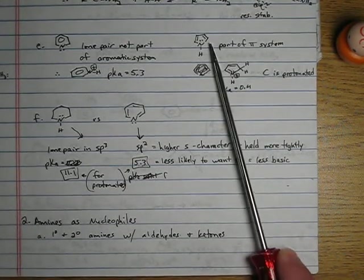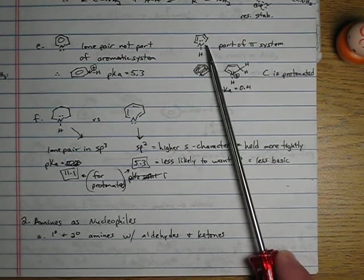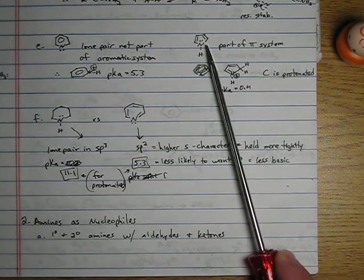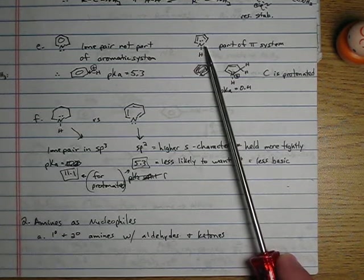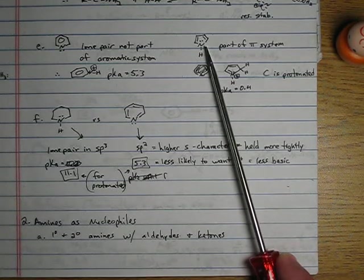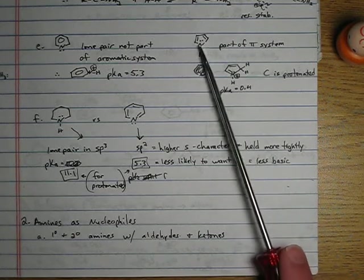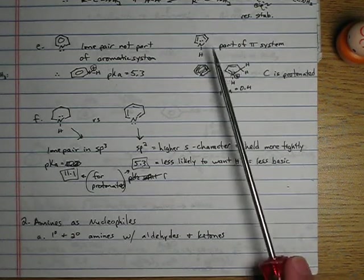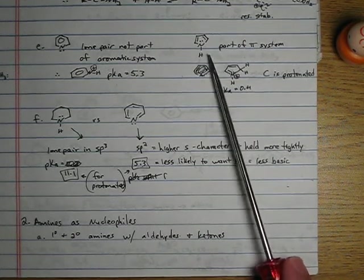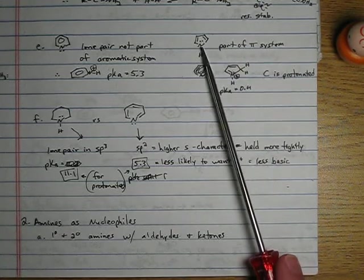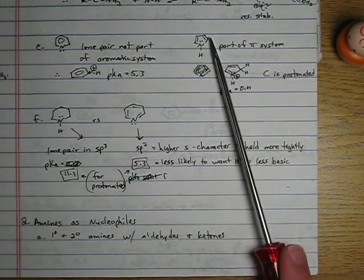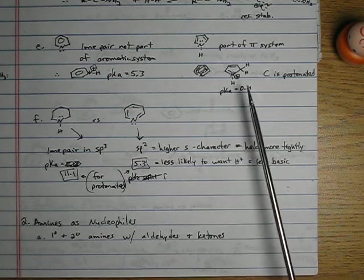Which means it doesn't want to be protonated, which means if you did protonate it, it would want to get rid of that hydrogen real quick. It would be much more acidic. In fact, this is kind of weird. Because these lone pairs are part of the pi system, if you protonate pyrrole, you don't actually protonate the nitrogen.